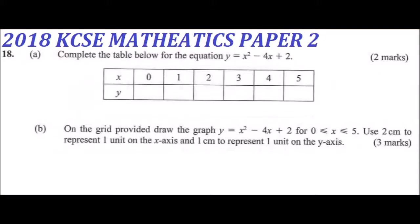This is question number 18, 2018 KCSE Mathematical Paper 2, which is on graphs. Part A, you are required to complete the table below for the equation y is equal to x squared minus 4x plus 2.